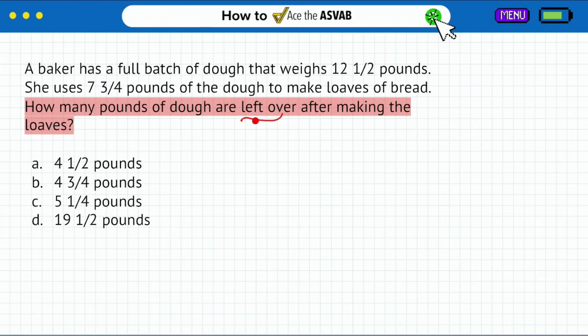So here we are. A baker has a full batch of dough that weighs 12 and a half pounds. She uses seven and three quarters pounds of the dough to make loaves of bread. So right there, that tells me this is how much we have. And then it shows that she uses seven and three quarters pounds of dough. This is a pretty quick and straightforward one for us.